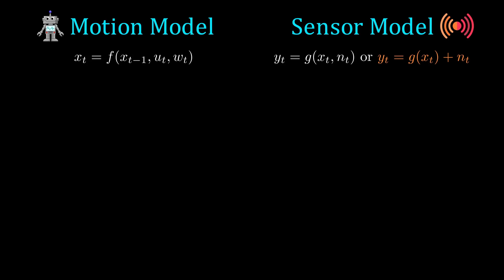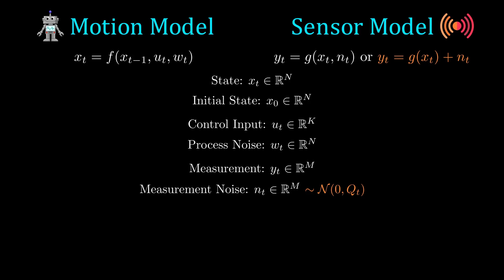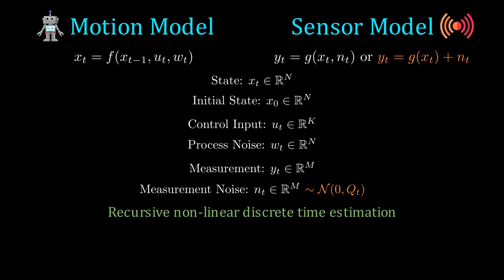The model setup is the same as the unscented Kalman filter, but we'll additionally consider when the sensor model has additive Gaussian noise. To put an exact name to what we're solving, the particle filter is a method of solving the recursive non-linear discrete time estimation problem.